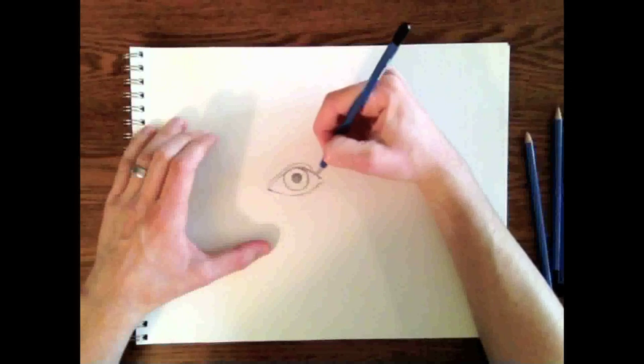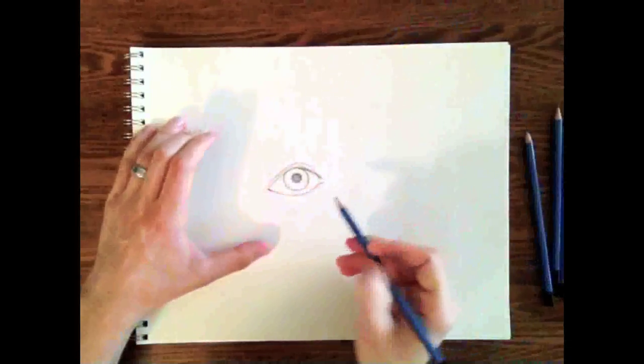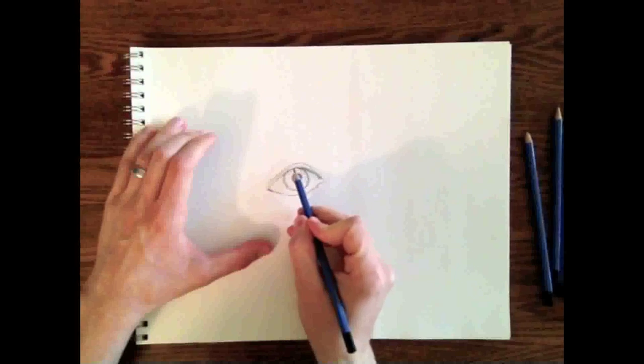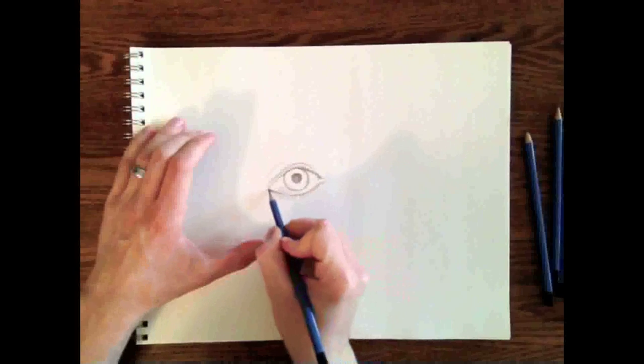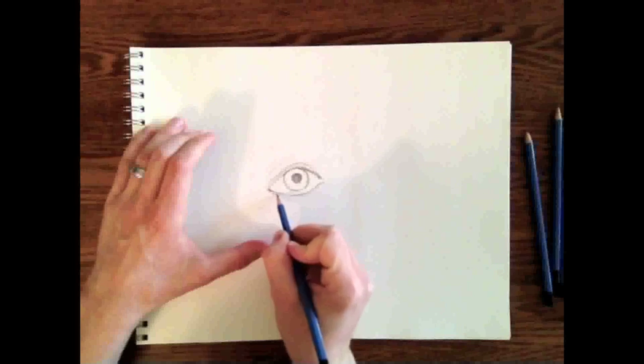The eyelid is three-dimensional. It is not invisibly thin. There is a visible quality to it. It comes out away from the eye.